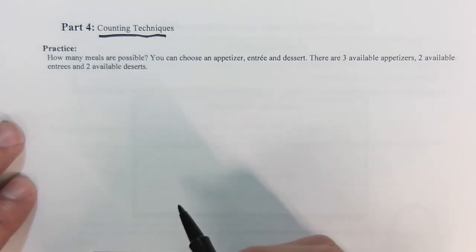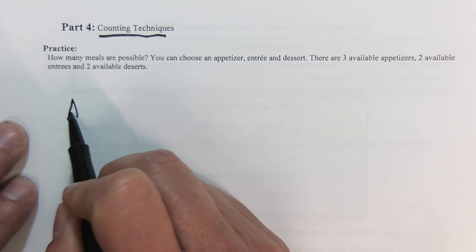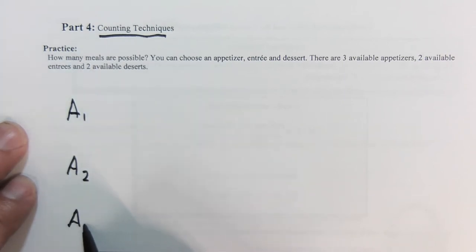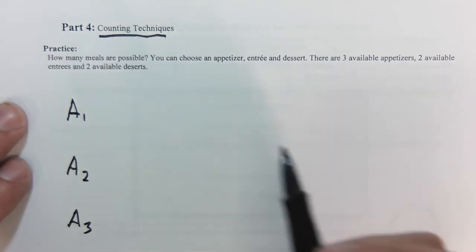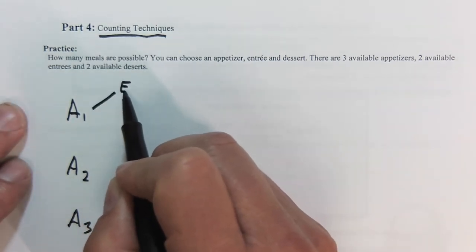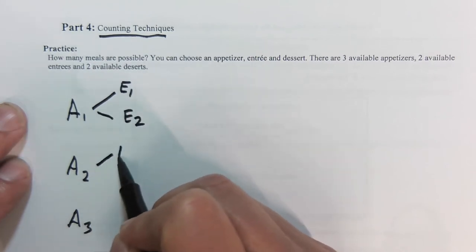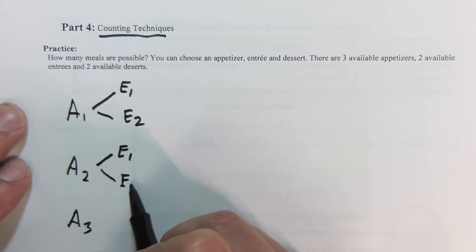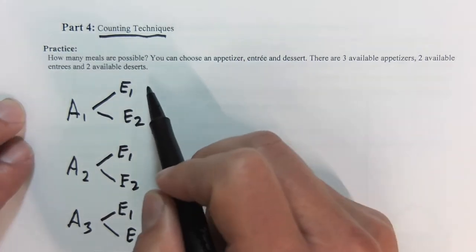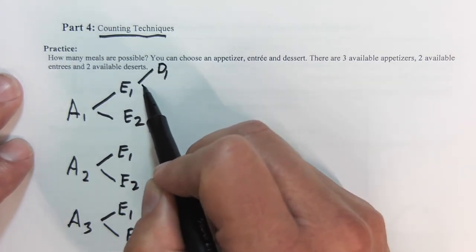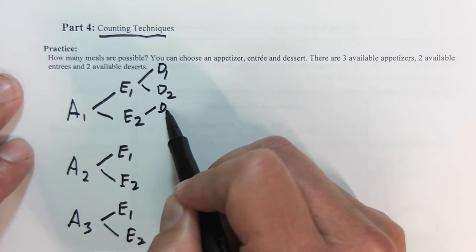We're going to do a tree diagram to sort of outline this. First off, I get to pick three appetizers. Here we have our three potential appetizers, and then from there each one gets to choose an entree. This is called a sample space for those of you who don't know that.